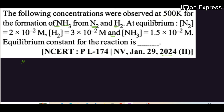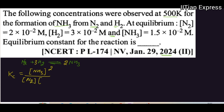You are supposed to write down the reaction: N2 + 3H2 → 2NH3. Let's balance this. Now this equation is balanced. You have to write Kc: Kc is equal to concentration of NH3 squared, divided by concentration of N2 multiplied by concentration of H2 to the power 3.